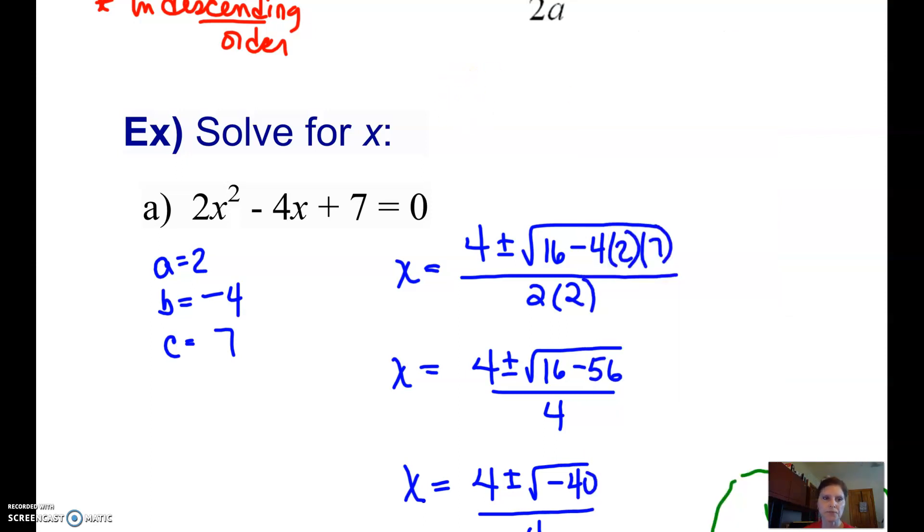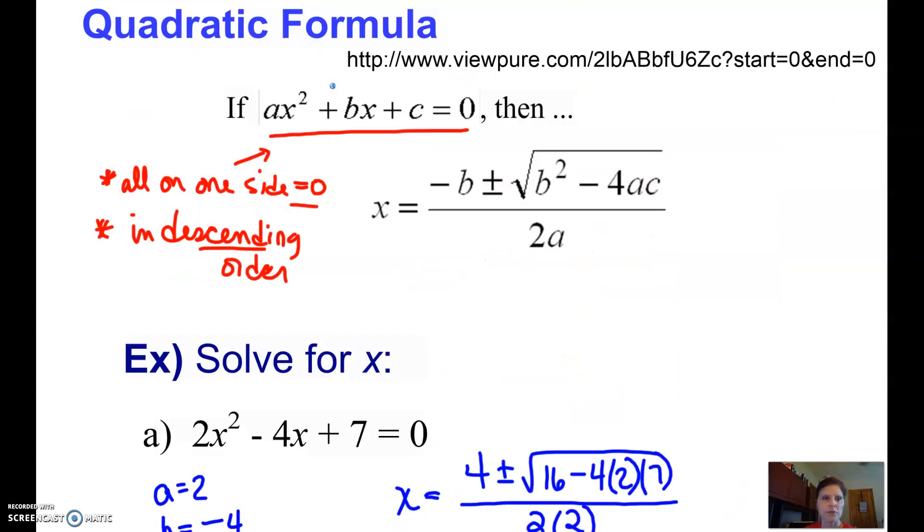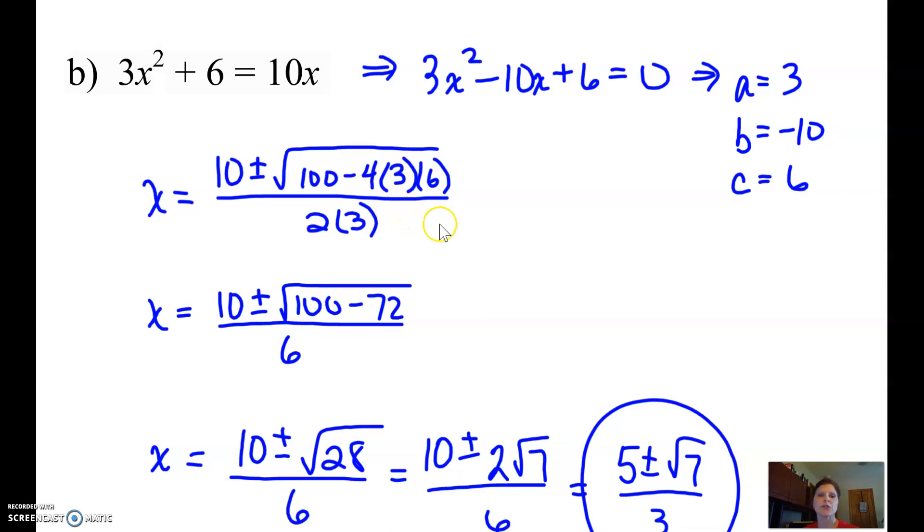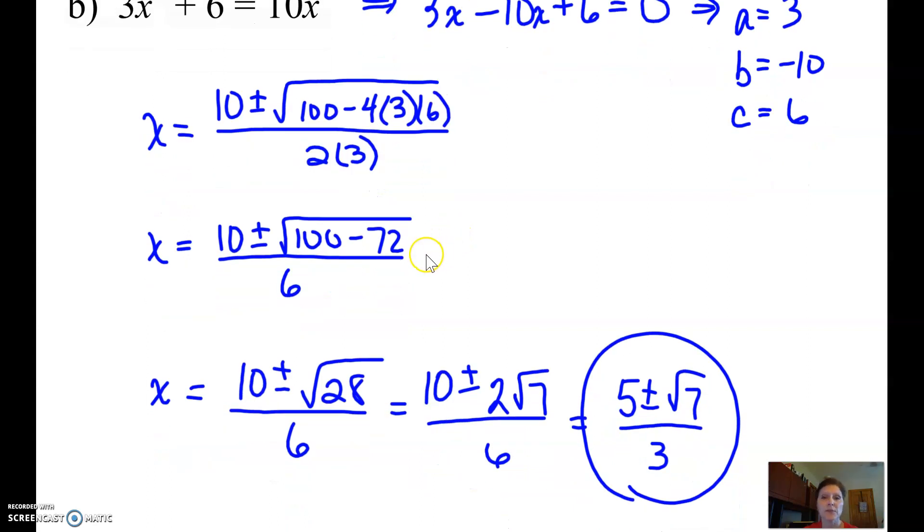Let's take a look at another one. 3x squared plus 6 equals 10x. Same deal. You're going to move the 10x over to the other side, so we have our equal 0, but when you move it, you've got to make sure that you keep things in order, x squared, x, and constant. Then you can identify your a, b, and c, plug them into your formula, do the simplifying.